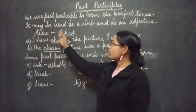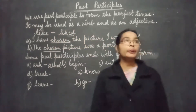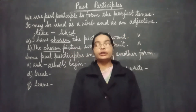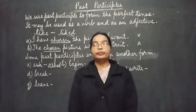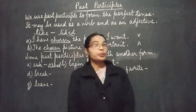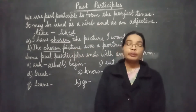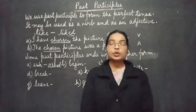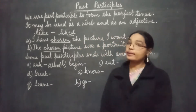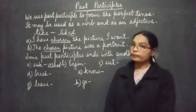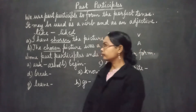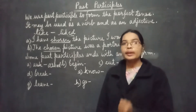Past participle may be used as a verb and as an adjective. Our past participle can be used as a verb and it can be used as an adjective too. Let's see some examples.